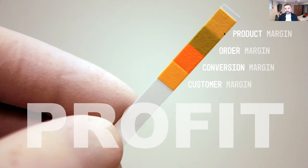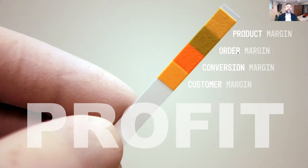The profit litmus test starts with product margin — we looked at pricing, cost of goods sold, orders per customer, and related factors. Then we talked about order margin: anything related to specific orders and the cost of doing business, such as returns, discounts, payment processing, and other variable costs tied to the actual order.